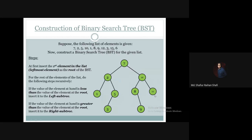Then we take 15 — 15 is greater than 2, so it goes to the right subtree, just like this. And lastly we have 6. 6 is less than 7, so it moves to the left subtree. 6 is greater than 2, so it goes to the right subtree. 6 is greater than 5, so it again goes to the right subtree of 5. This is the binary search tree for the given list of elements.